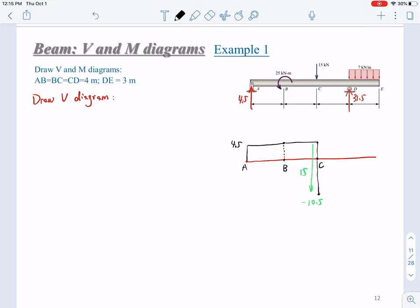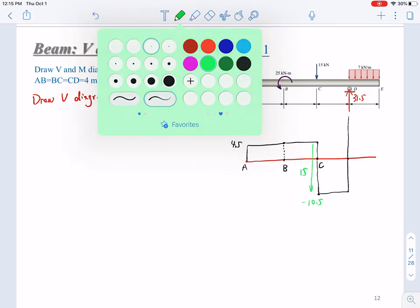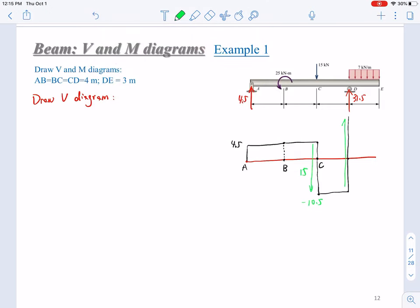Then from C to D, nothing acting on it. But at point D, you will encounter an upward 31.5. So this will be going upward, going upward by 31.5. It will be reaching a value that will be 31.5 minus 10.5, it will be 21.